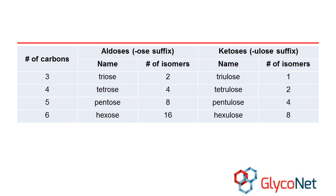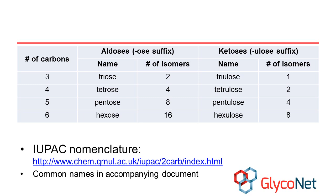A prefix is added to indicate the number of carbons in the sugar backbone. For instance, an aldose with 6 carbon atoms is called a hexose, while a ketose with 5 carbon atoms would be a pentulose. IUPAC has a systematic method of carbohydrate naming that we encourage you to become familiar with. In this module, we will be focusing on the more commonly used naming conventions.